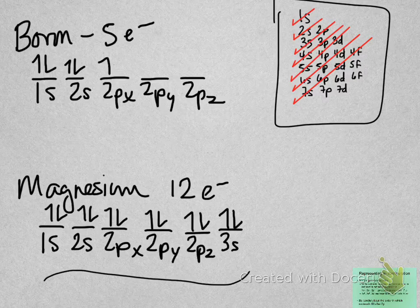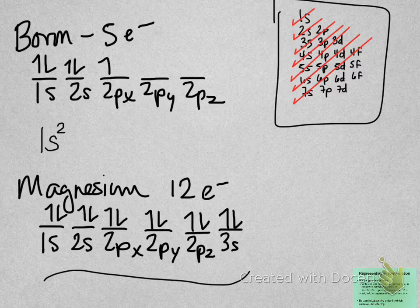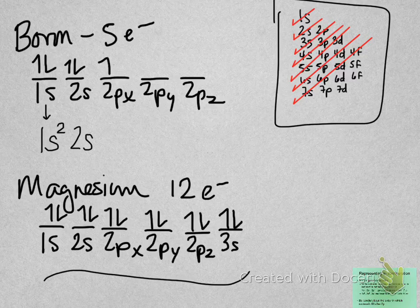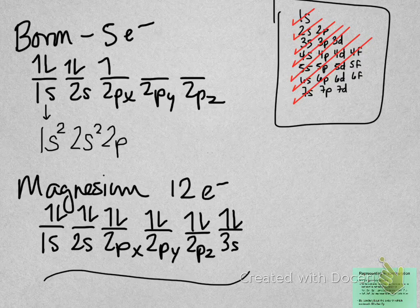In the electron configuration notation, we write the name of the subshell. And as a superscript behind it, we put in the number of electrons found in that subshell. So we'd write 1s2, 2s2, 2p1. It's really that easy.